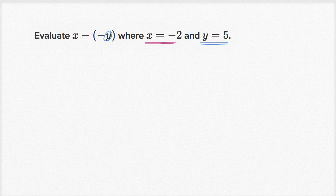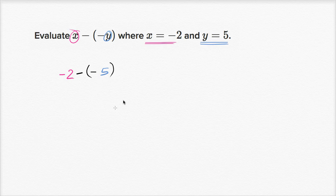So this is a y right over here, and this is an x. Let's do that. So instead of that x, let's write negative two. So we have negative two minus, and then we have open parentheses, a negative y. Y is equal to five. Now what is this going to evaluate to? Well this is the same thing as negative two. Subtracting a negative five — that's the same thing as adding a five. So it's going to be negative two plus five, which is equal to three.